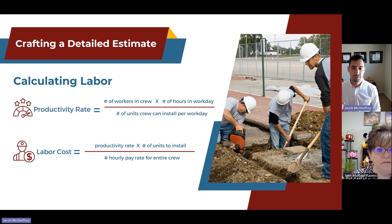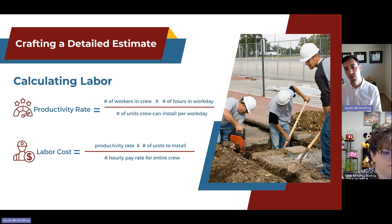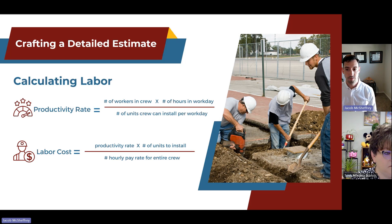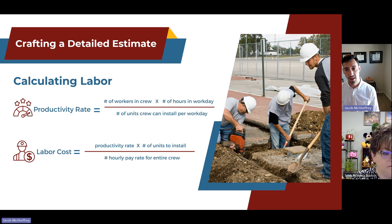Now let's calculate labor. Labor productivity rate is the rate at which crews can produce work. To find the productivity rate, take the number of workers in a crew, multiply by the number of work hours in a workday, and divide by the number of units crews can install per workday — that unit figure comes from company data. Once you have the productivity rate, multiply it by the number of units to install, then divide by the hourly pay rate for the entire crew to get your labor cost.